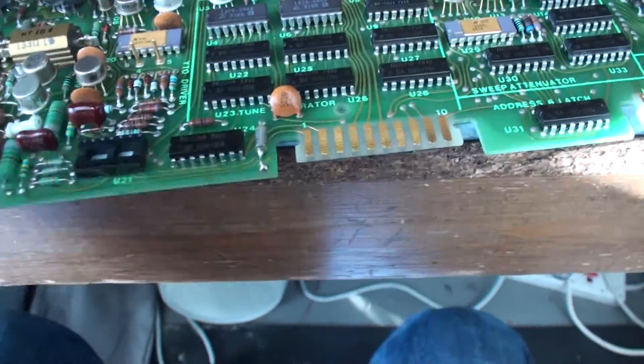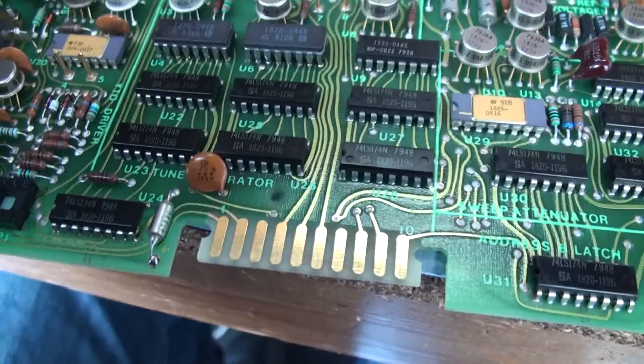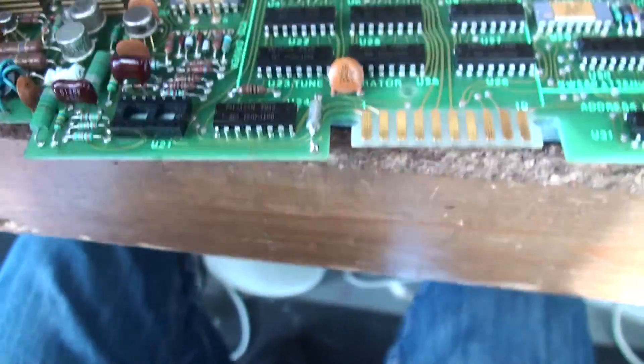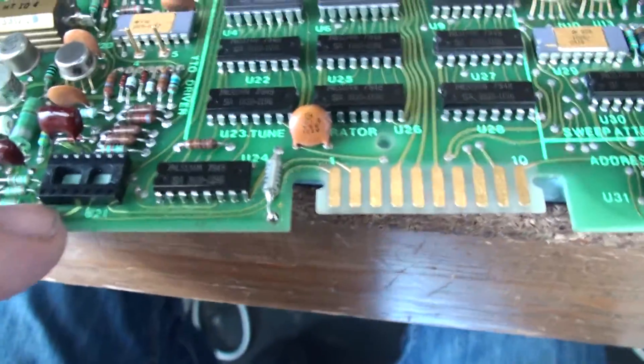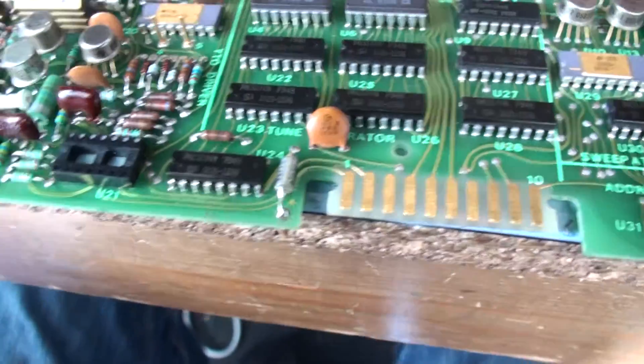So I looked at the input of this comparator and there was no shift on the level at all. Whatever I did on the inputs, inverting and non-inverting, the output stayed exactly the same.